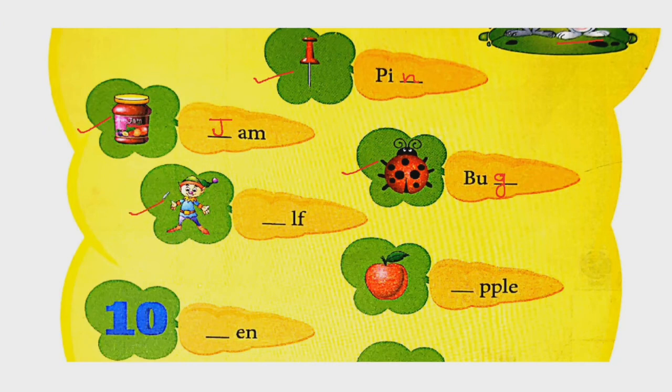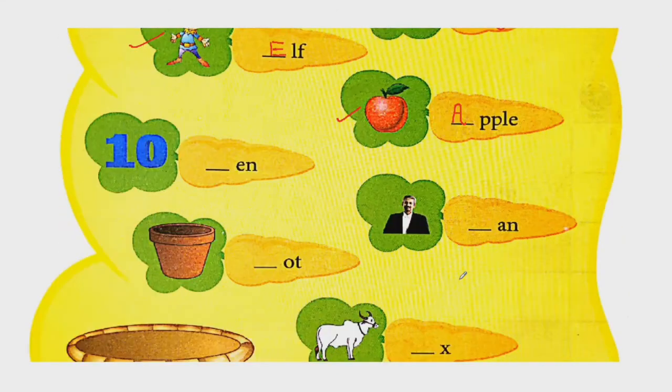Next picture, what is this? This is bug. So B-U-G, bug. G is also consonant. Now look at this picture. Who is this? This is an elf. So elf starts with E. Here E is a vowel. Now this picture is apple. Apple starts with A. So A is a vowel. What is this number? This is ten. So T-E-N, ten. It is a consonant.